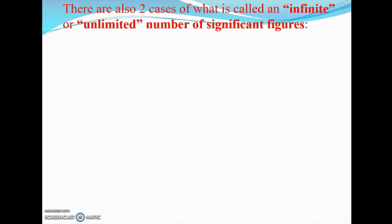There are a couple of cases where you can have what's called an infinite or unlimited number of significant figures. It sounds like some crazy mathematician thing, but it's actually really practical. The first one is a number that is counted — so if you have five apples, you have exactly five apples. There's no ambiguity; it's essentially 5.0000... with an infinite number of significant figures.